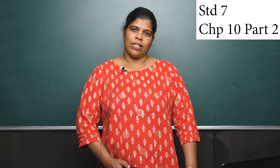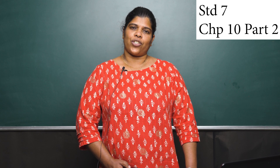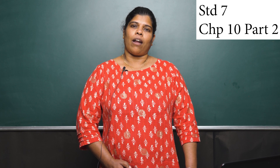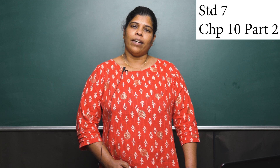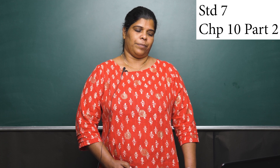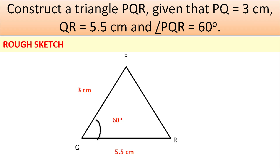As I have told you first, before construction, you need to draw a rough sketch. Here is the figure. Angle PQR is equal to 60 degrees, and that angle should lie at the base — then only you can construct this triangle.